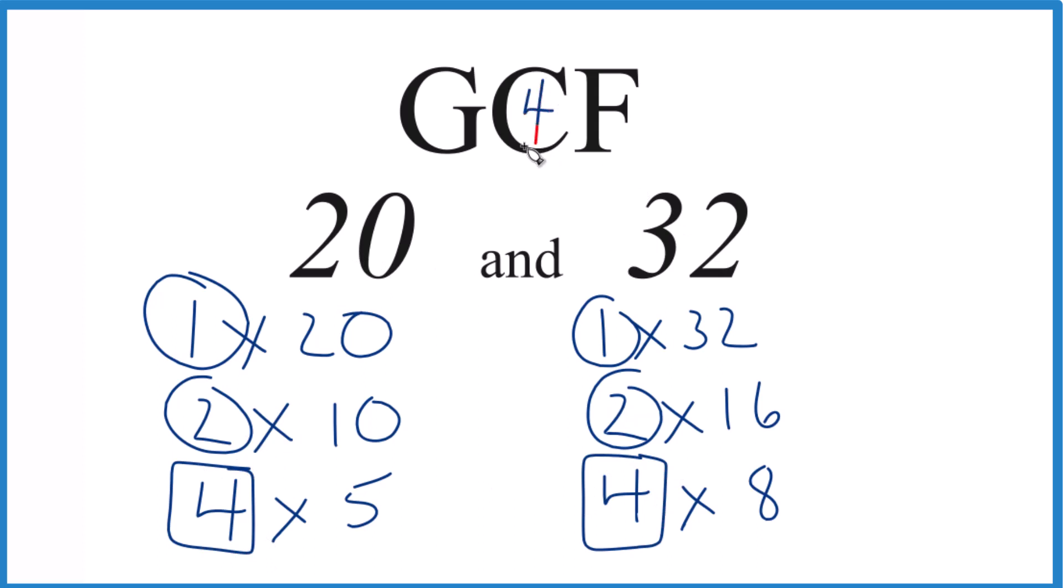So that's how you do it. There are other ways to find the greatest common factor for 20 and 32, like prime factorization, but unless you have a really big number, this is a nice way to do it.